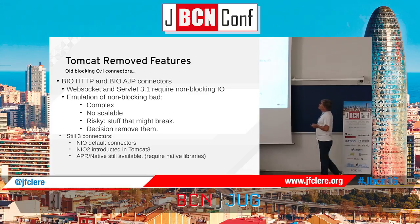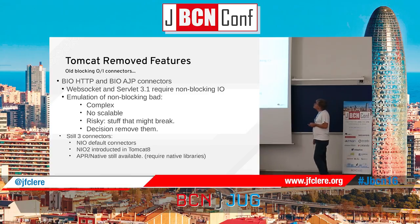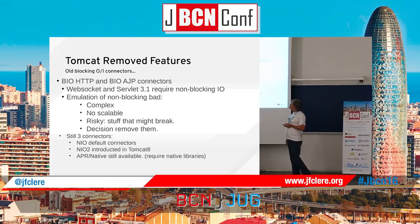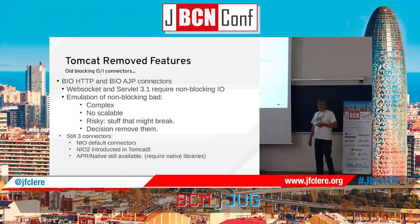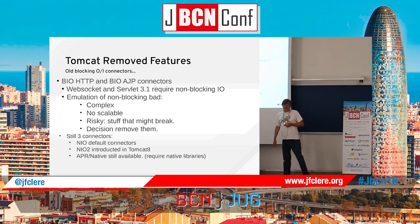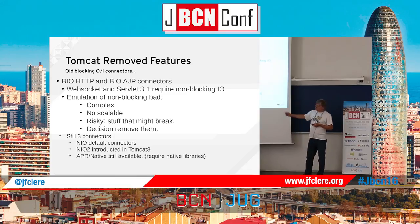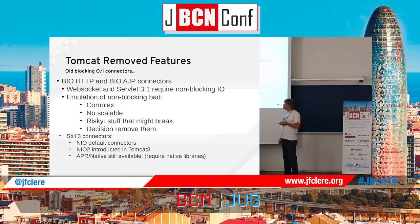There are several reasons to do that. We also had some users who required non-blocking. Emulating non-blocking with a blocking API was a challenge, but we were very happy to move. There are three connectors: NIO, NIO2, and APR — two different implementations of Java NIO. And the old native APR connector is still available, which requires the APR library and OpenSSL.